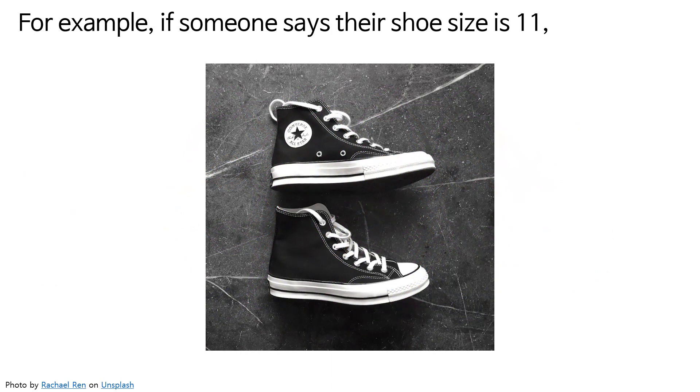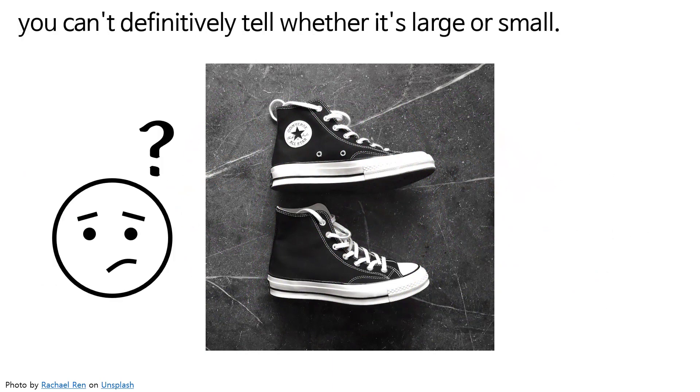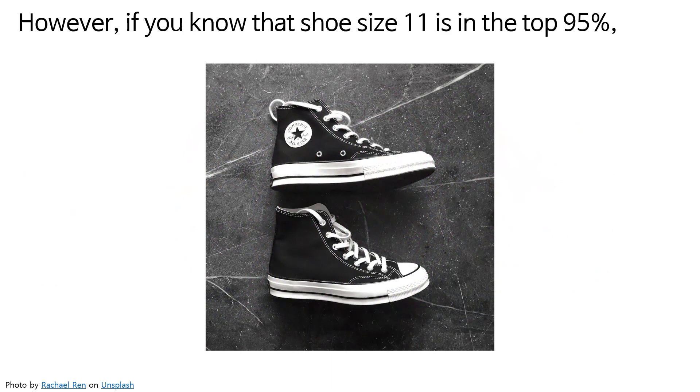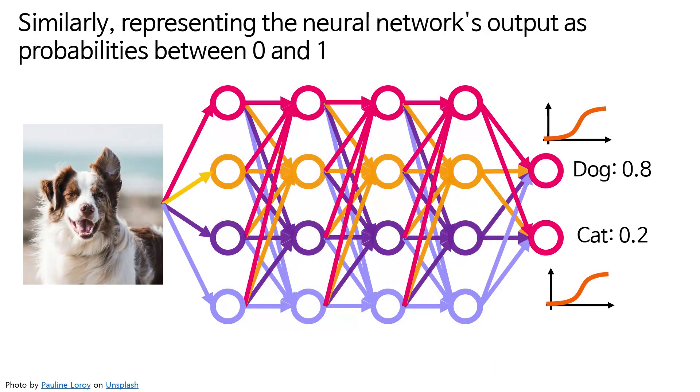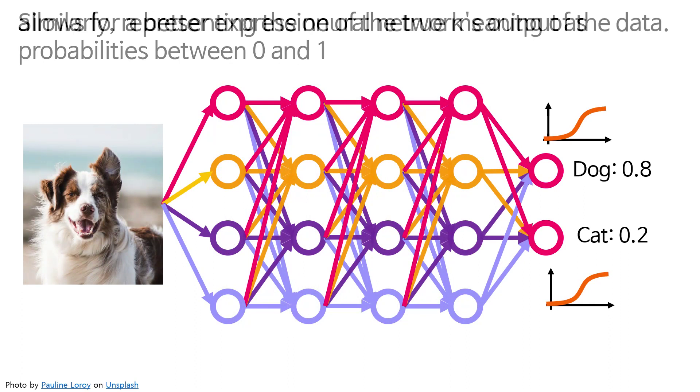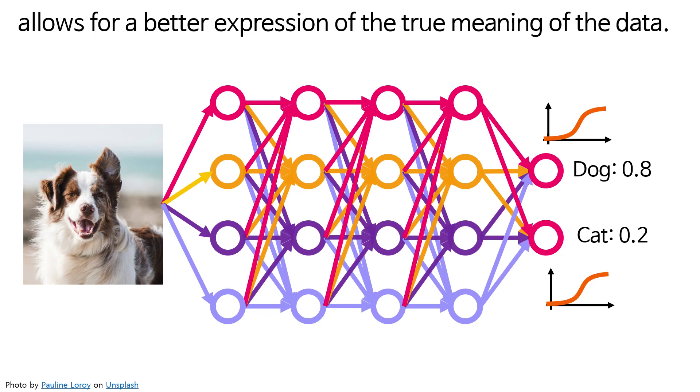For example, if someone says their shoe size is 11, you can't definitively tell whether it's large or small. However, if you know that shoe size 11 is in the top 95%, you can finally determine that the person has large feet. Similarly, representing the neural network's output as probabilities between zero and one allows for a better expression of the true meaning of the data input values.